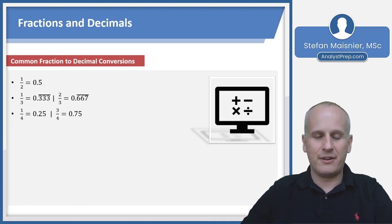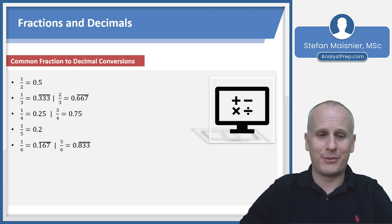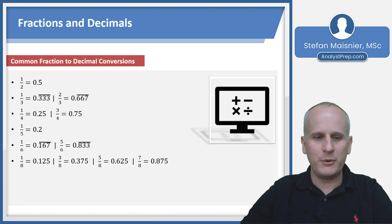One quarter is half of a half, so 0.25. Three quarters is 0.75. One fifth is 0.2. One sixth is 0.1667 repeating, and five sixths is 0.833 repeating. There's proportionality here: if one fifth is 0.2, then three fifths is 0.2 times three or 0.6.